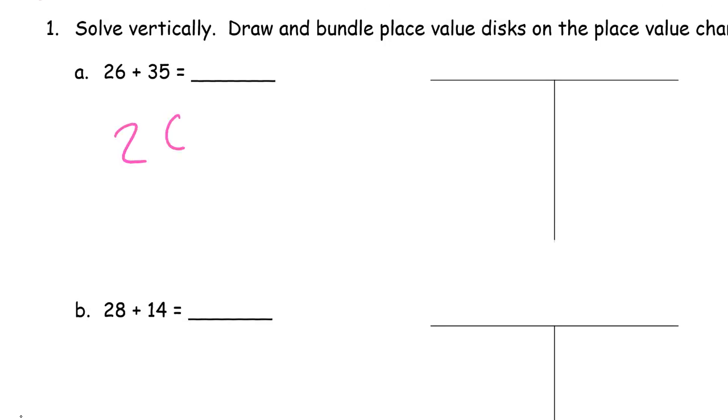So here's what it should look like. Vertically, 26 plus 35. The 6 and the 5, that's 11. So that's a 10 and a 1. There's a 10 and there's a 1. And then we add the 10s: 2, 3, that's 5, one more is 61. So on the place value chart, it looks like this.